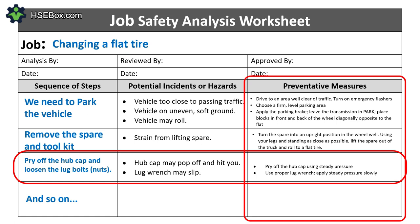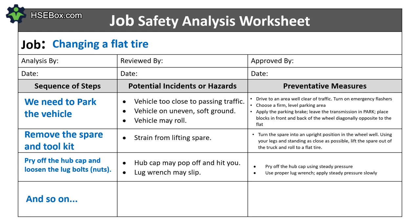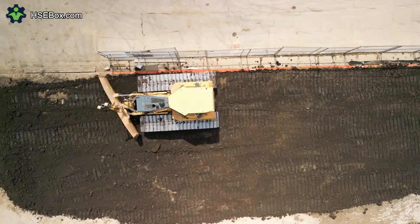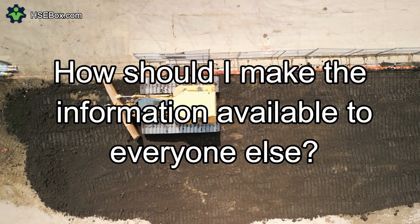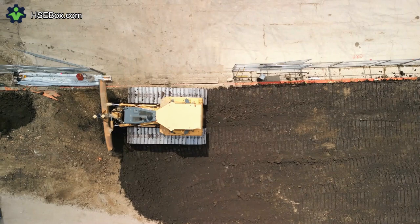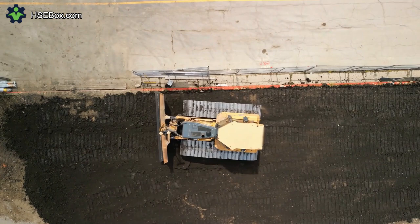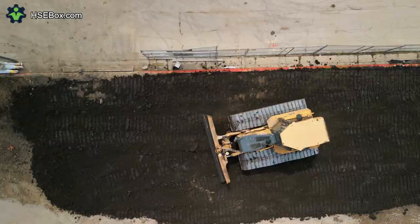It is important to share this information within your organization. JSA is a useful technique for identifying hazards so that workers can take measures to eliminate or control them. Once the analysis is completed, the results must be communicated to all workers who are or will be performing that job. The side-by-side format used in JSA worksheets is not an ideal one for instructional purposes — better results can be achieved by using a narrative-style communication format.